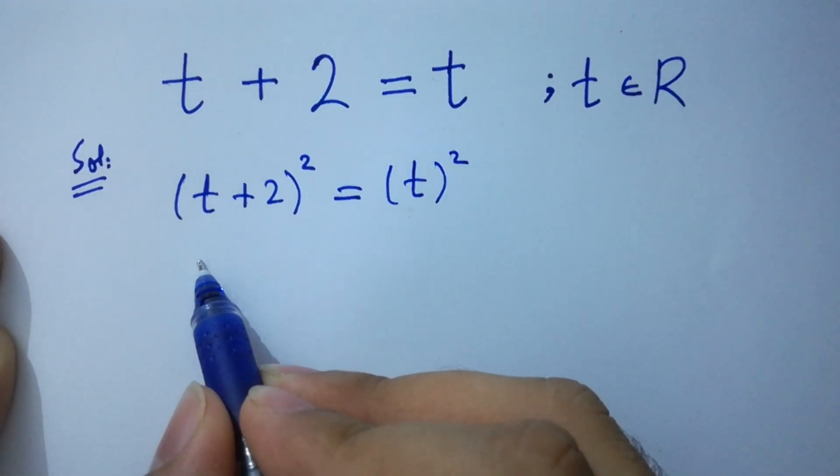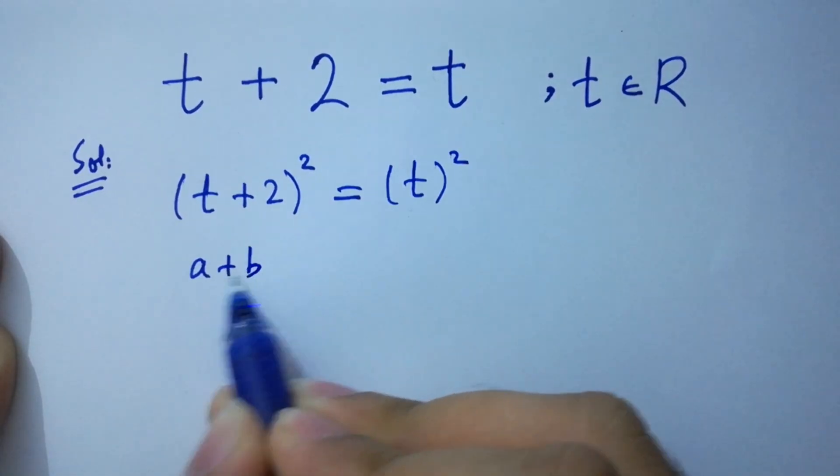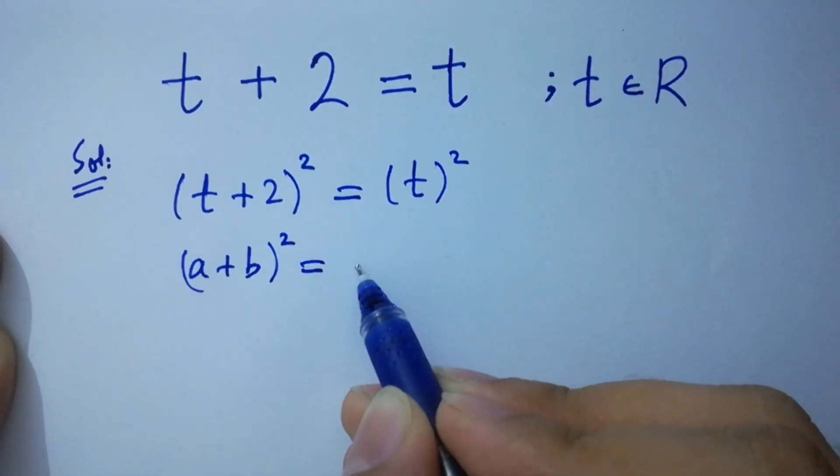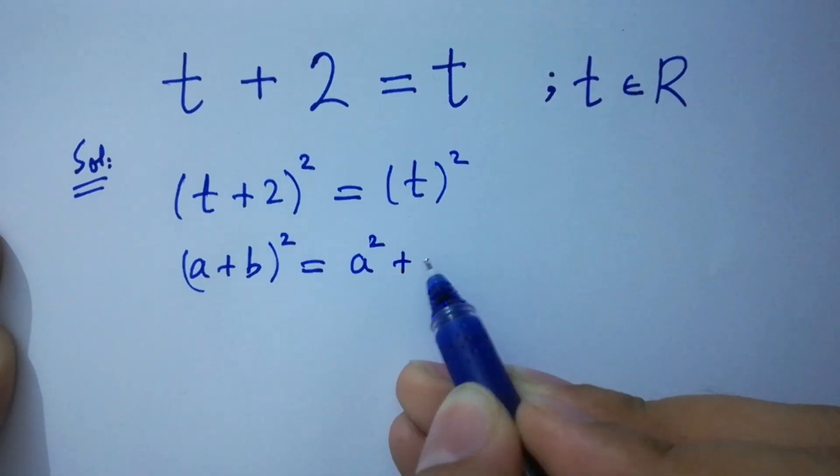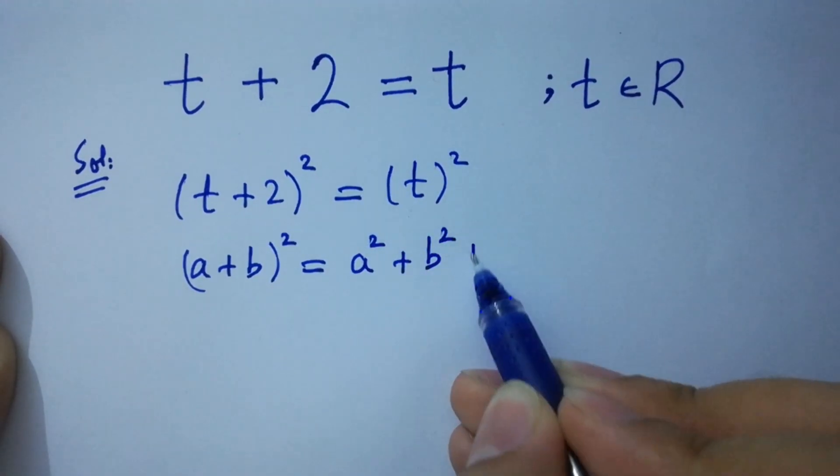We know the formula of a plus b whole square, which is equal to a square plus b square plus 2ab.